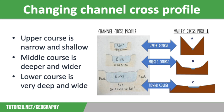In the middle course, the channel is starting to become deeper and wider and it is normally more than a metre deep. And in the lower course, the channel becomes even wider and can actually be more than a kilometre wide for the biggest rivers in the UK. The river is also much deeper here too.